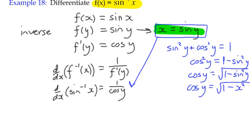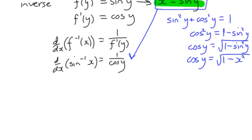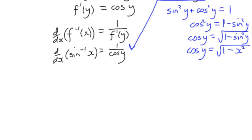So we can say that from our function x equals sine y that we can rearrange that so that cos y equals the square root of 1 minus x squared. We can substitute that in for cos y and we get the square root of 1 minus x squared.